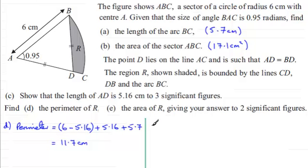So if we work out then for part E, the area of triangle ABD is going to equal half the side AB which is 6 multiplied by the side AD which is 5.16 or you might prefer to use the unrounded version of this answer which is 5.1574 and so on. And then we multiply this by the sine of the included angle which is 0.95 radians.